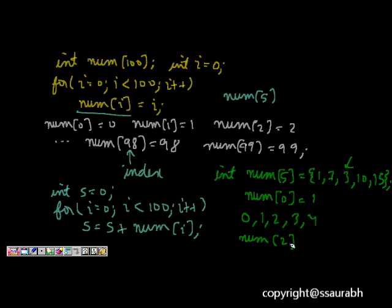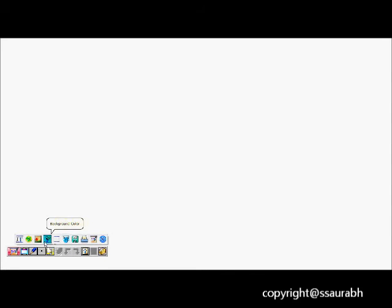This way what happens is now num[0] is 1, num of 2 is 3, and num of 4 is 15. This way we see that we can initialize arrays. This is initialization of arrays. Now what we see is let's look at some other types of arrays. If we want to define, let's say a float, what will happen? We will write data type float, then we can write f num, and let's say we want to have an array of floats of size 10.